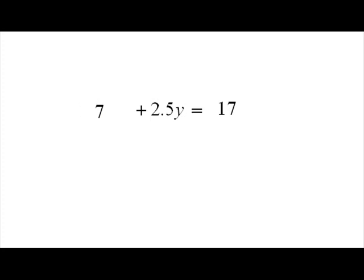This gives me 7 plus 2.5y is equal to 17. This is nothing more than basic arithmetic. My ultimate goal is to find out what y equals. So I'm solving for y. I'm going to subtract 7 from both sides. The 7 cancels out on the left side, and I now have 17 minus 7 on the right side.